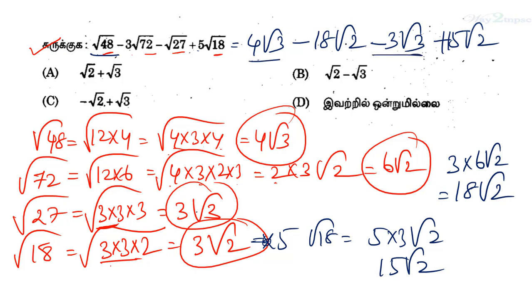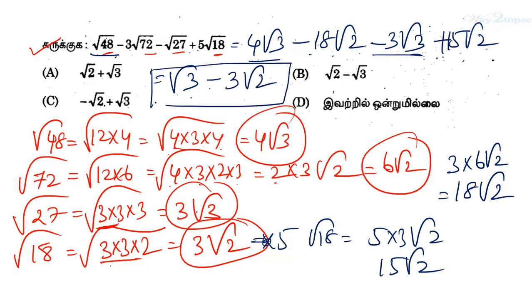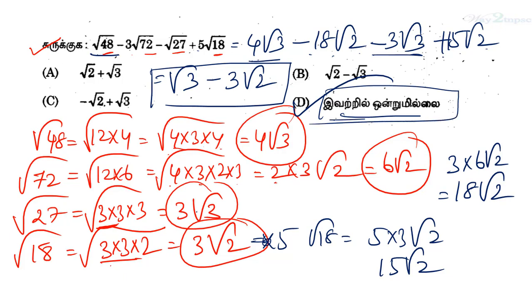So we add 4 root 3, then minus 3 root 2, combining the root 2 terms. If you work through this, you can solve the simplification.